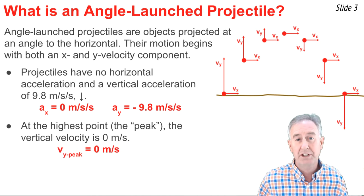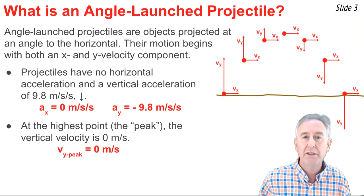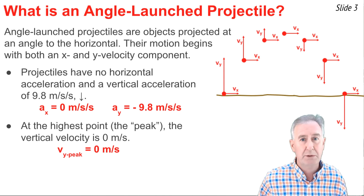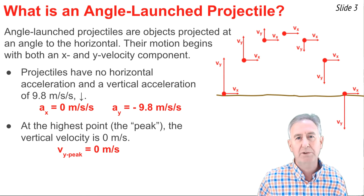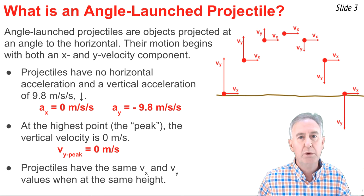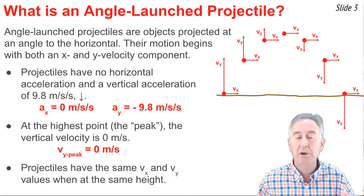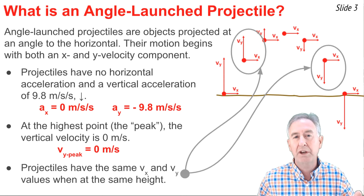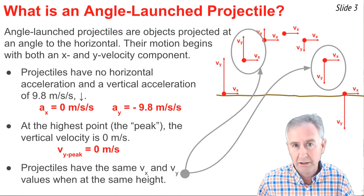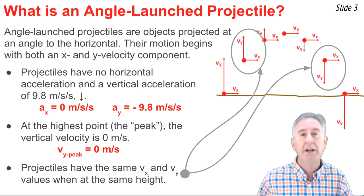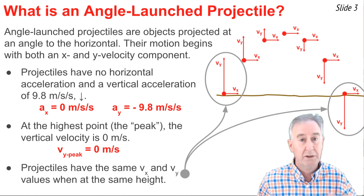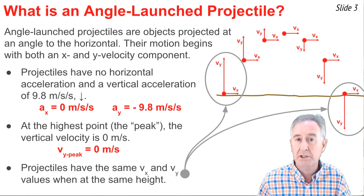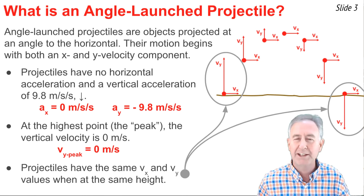The second thing to understand is that at the very highest point in the trajectory, the vertical velocity is zero meters per second — no vertical arrow at that point, vy equals zero. And finally, if you take a projectile at two locations of the same height, the vy value is equal and opposite at those two points. You can see this in the diagram for one second and five seconds, and for zero and six seconds. The vx is the same at both positions of equal height, and the vy magnitudes are also the same.